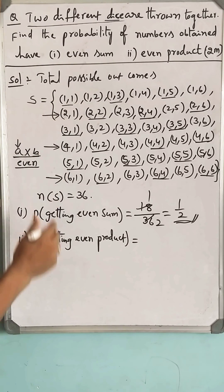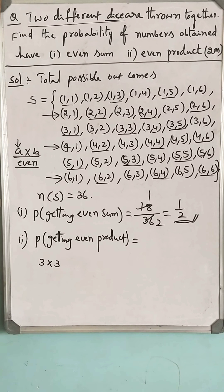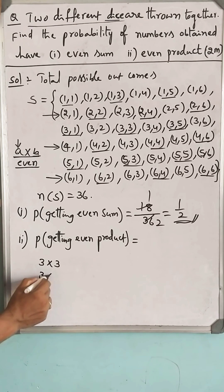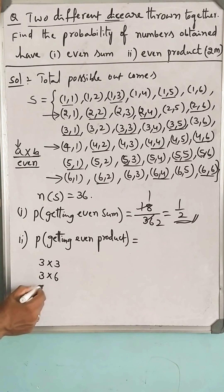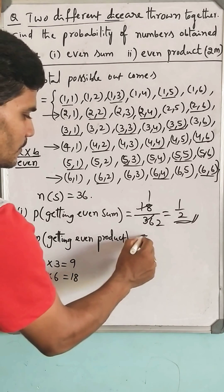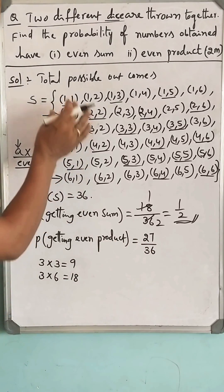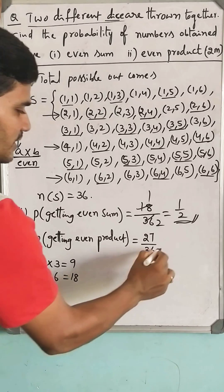So how many? In 3 rows there are 3 products and in 3 rows there are 6 pairs, totally 3 times 3 is 9, 3 times 6 is 18, 27 out of 36 are having the even product.